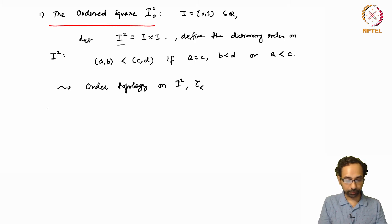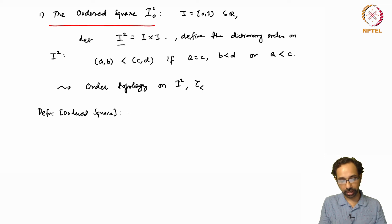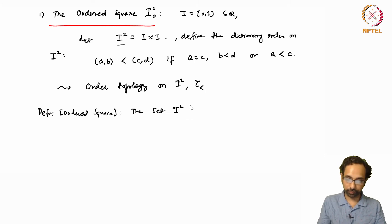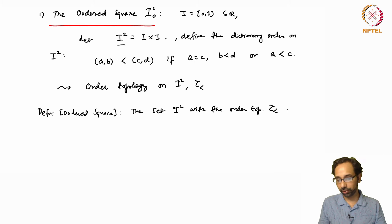This dictionary order gives rise to the order topology on I², which I will denote τ<. The ordered square is defined as the set I² with this order topology τ<.